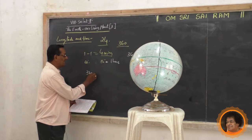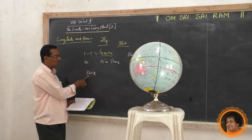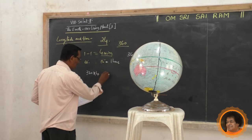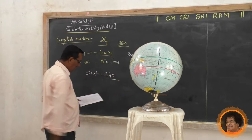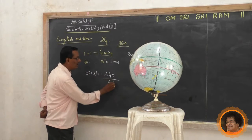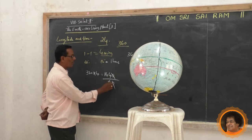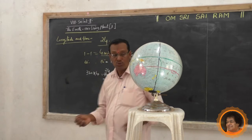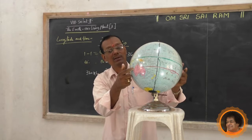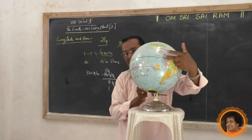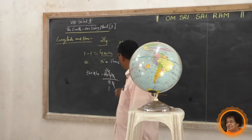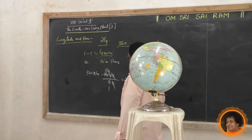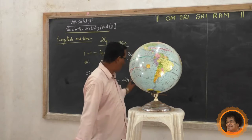Total longitudes are 360. At 4 minutes per longitude, that gives 1440 minutes. Divided by 60, the answer is 24 hours. Therefore, to complete one full rotation west to east, the earth takes 24 hours or 1 day.